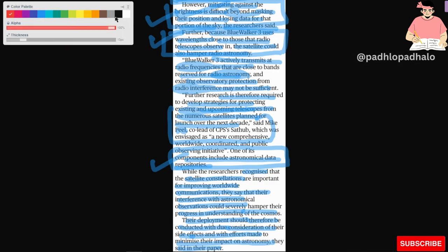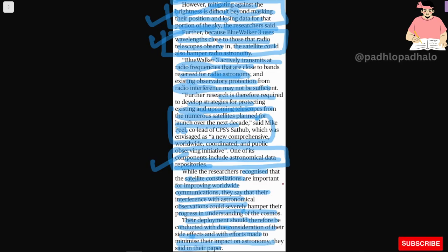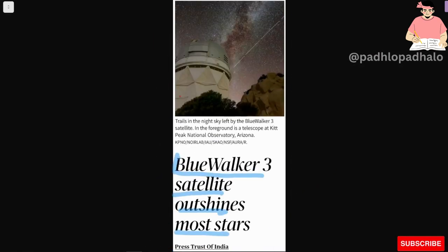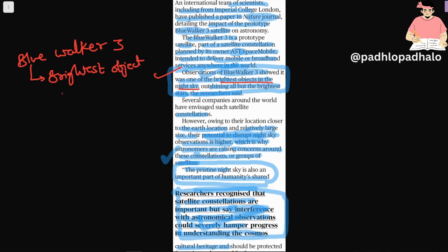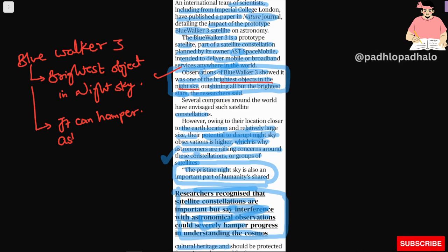So let's look at the exam point of view. Blue Walker 3 is the brightest object in the night sky. It can hamper astronomy.